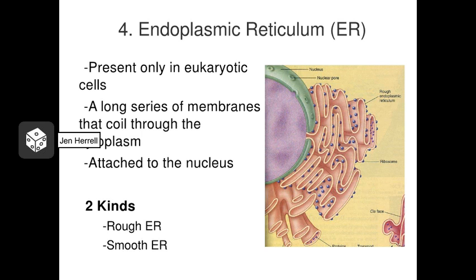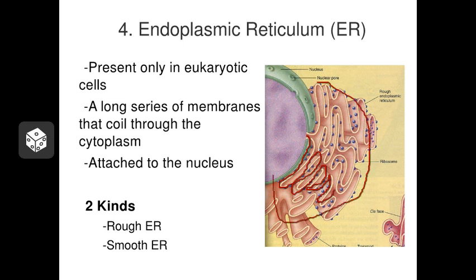The endoplasmic reticulum, or ER, is attached to the nucleus. It's essentially a giant sheet of plasma membrane that's been folded back and forth on itself to form this giant fan-like structure. Inside the little pockets of this fan-like structure, different chemical reactions can occur. So the ER is capable of making lots of different molecular products, including proteins and lipids and others. There are two different kinds of ER, which we'll discuss next.